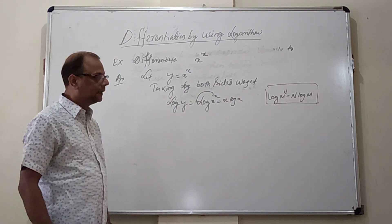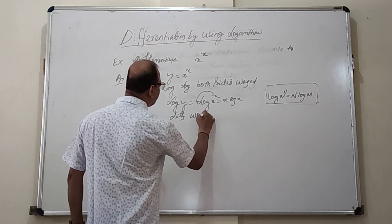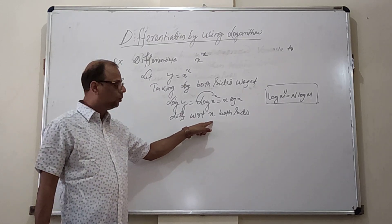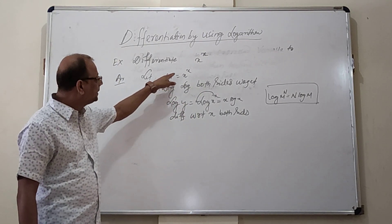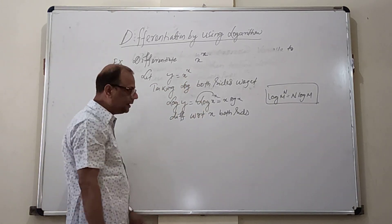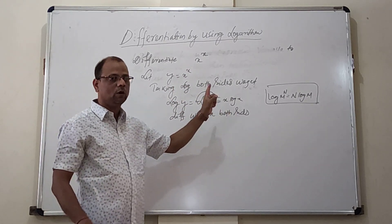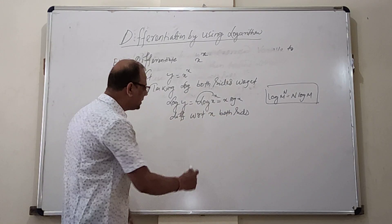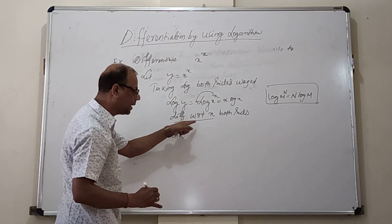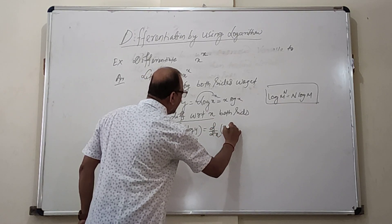Now to find the derivative dy/dx, differentiating with respect to x on both sides. The variable y is expressed as a function of x, so we write dy/dx on the left. On the right-hand side we differentiate x·log x with respect to x.